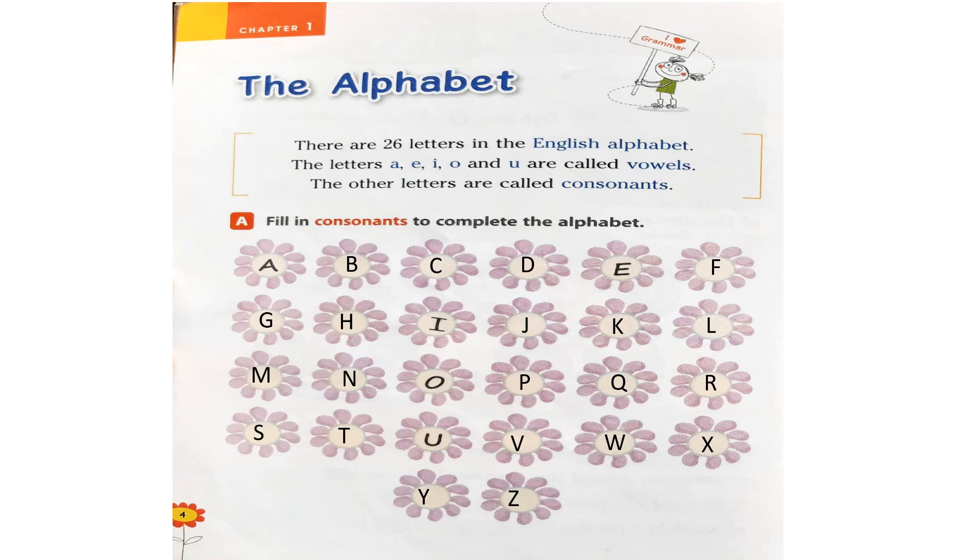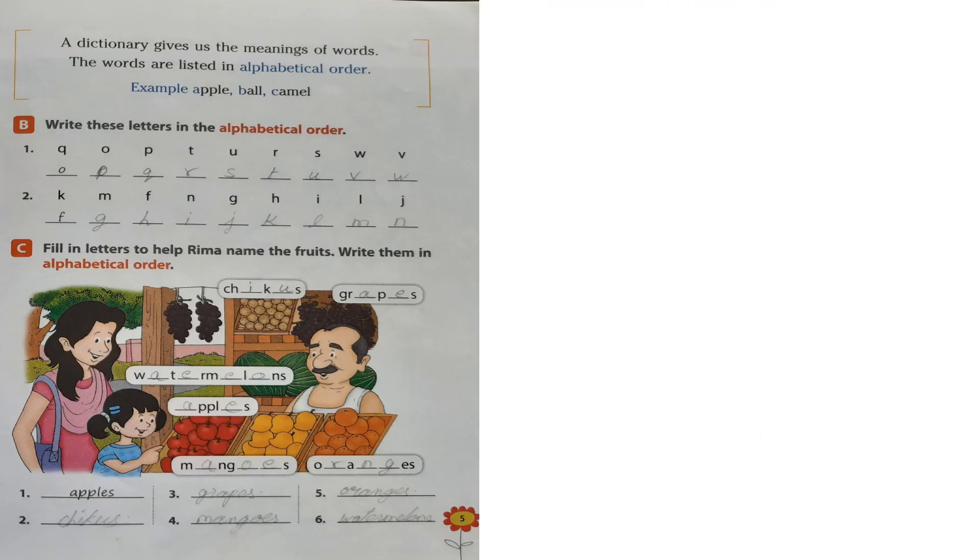Now come to the next page. We also show how to arrange the words in alphabetical order. Do you remember that? Yes. Now look at this. A dictionary gives us the meanings of words. The words are listed in alphabetical order. Now let us arrange these words into alphabetical order. Come let's try.